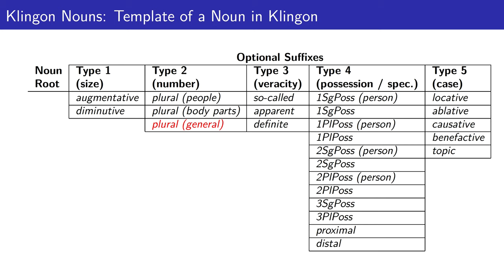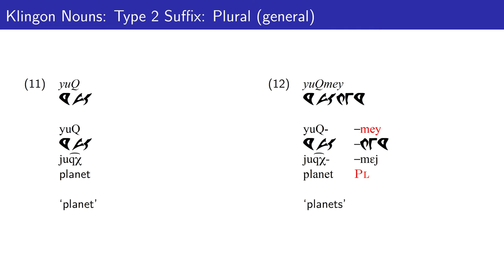If a noun is neither a person nor a body part, then we use a different plural suffix: 'mey'. In example 11, we have the word for planet. A planet is not a person, nor is it a body part, and so the general purpose plural suffix 'mey' is used, leaving us with the word for planets.